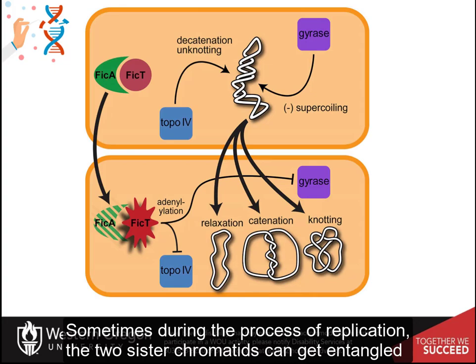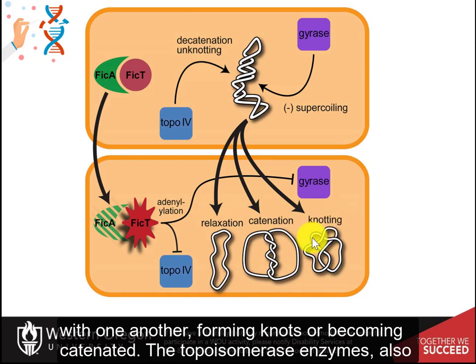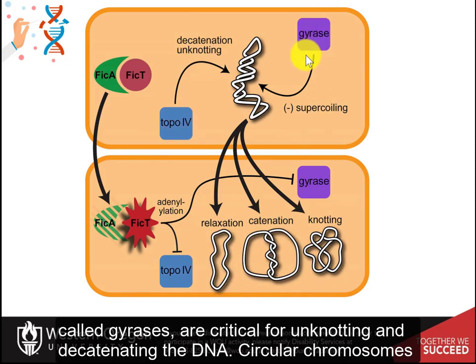Sometimes during the process of replication, the two sister chromatids can get entangled with one another, forming knots or becoming catenated. The topoisomerase enzymes, also called gyrases, are critical for unknotting and decatenating the DNA.